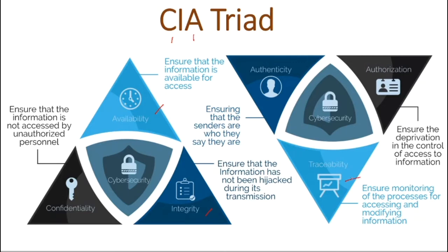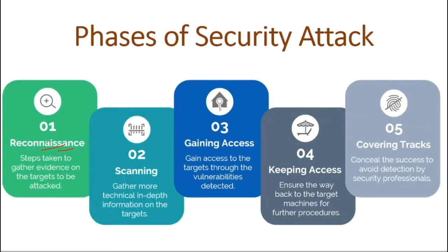Building on these three CIA properties, we have three additional terms. First is Traceability — whenever someone is modifying the information, we keep track of who is doing that, keeping logs. Second is Authenticity — ensuring the person is who they claim to be, not an attacker disguising as a legitimate user. Third is Authorization — ensuring information is under the right authorization controls and users have only the rights they are permitted.